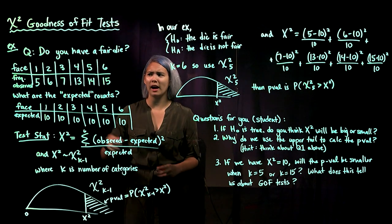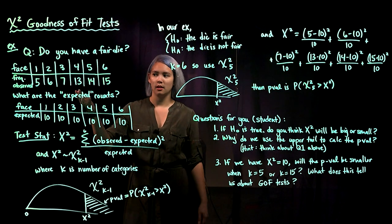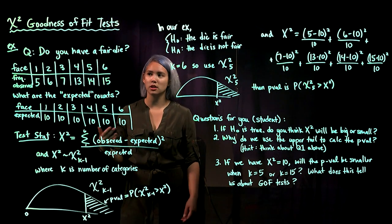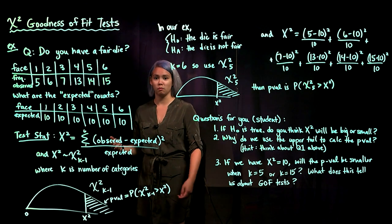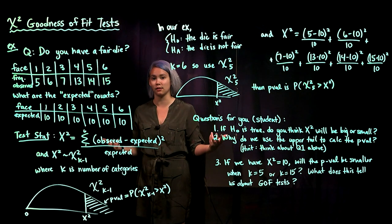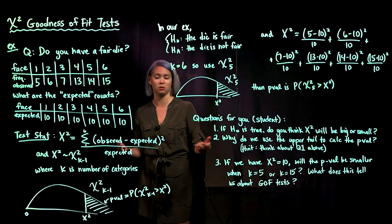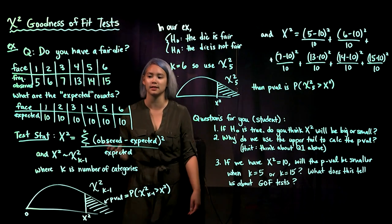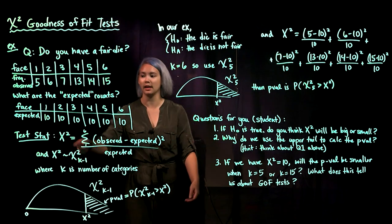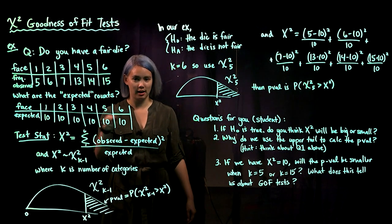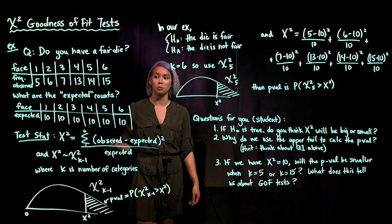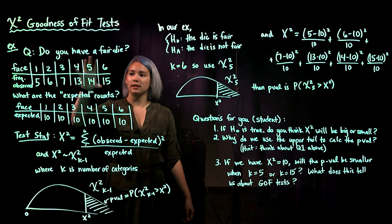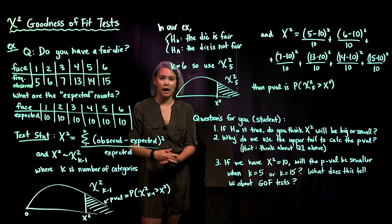We instinctively think this is not a fair die because the data are far from what we would expect if the die was actually fair. If the die were fair, we would expect the rolls to be uniformly distributed across the six faces — in other words, if we rolled 60 times, we'd expect to see each face ten times. Of course there's going to be variability because this is probabilistic, but ten is the expected count for each face.